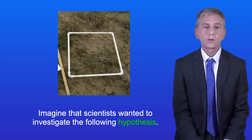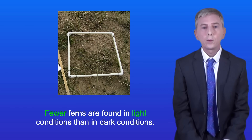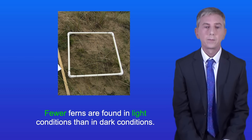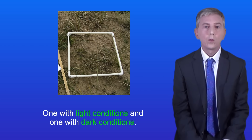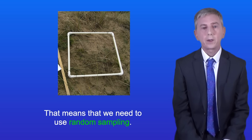Imagine that scientists wanted to investigate the following hypothesis: fewer ferns are found in light conditions than in dark conditions. In this case we're comparing two different areas — one with light conditions and one with dark conditions — which means that we need to use random sampling.